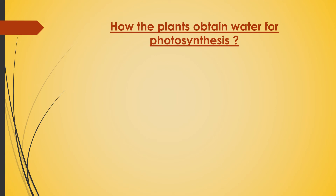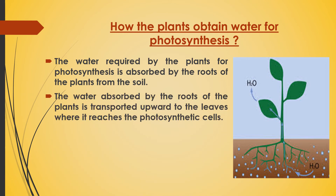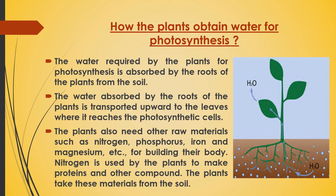How do plants obtain water for photosynthesis? The water required by plants is absorbed by the roots from the soil. The water absorbed by the roots is transported upward to the leaves where it reaches the photosynthetic cells. Plants also need other raw materials such as nitrogen, phosphorus, iron, magnesium, etc. for building their body. Nitrogen is used by plants to make proteins and other compounds. Although nitrogen is present in the atmosphere, plants cannot consume it directly — they need nitrogen in dissolved form, which they take from the soil.